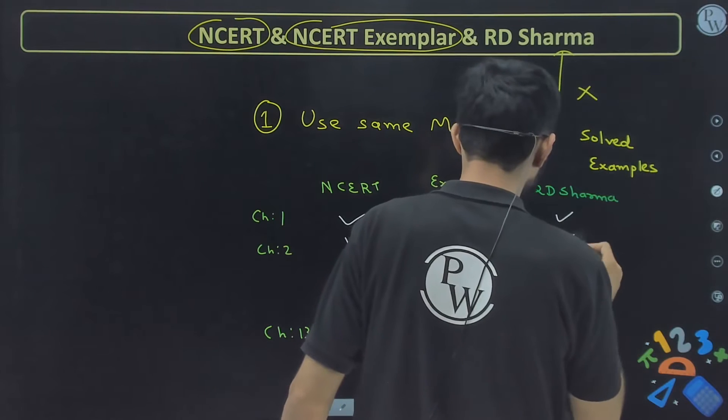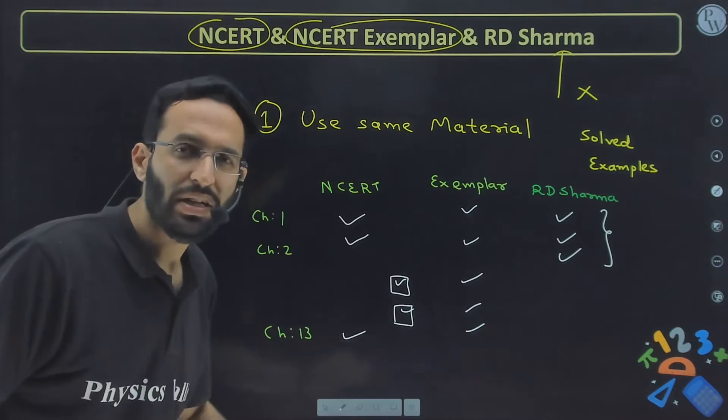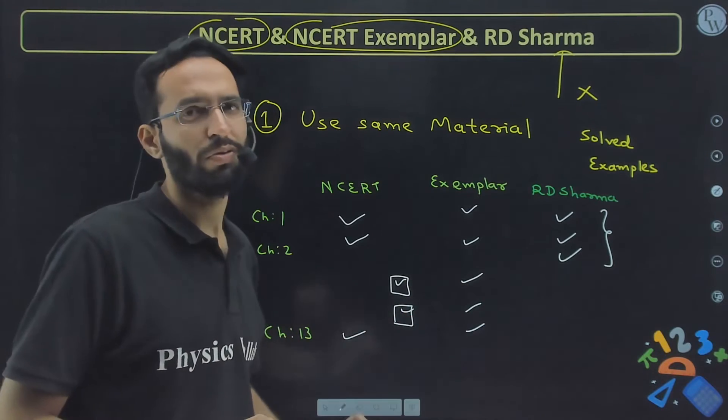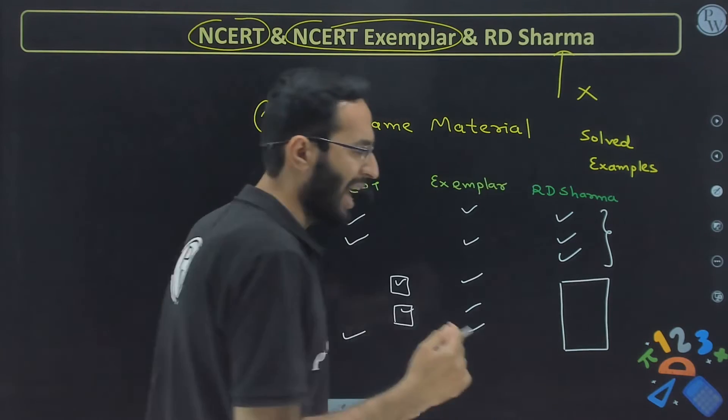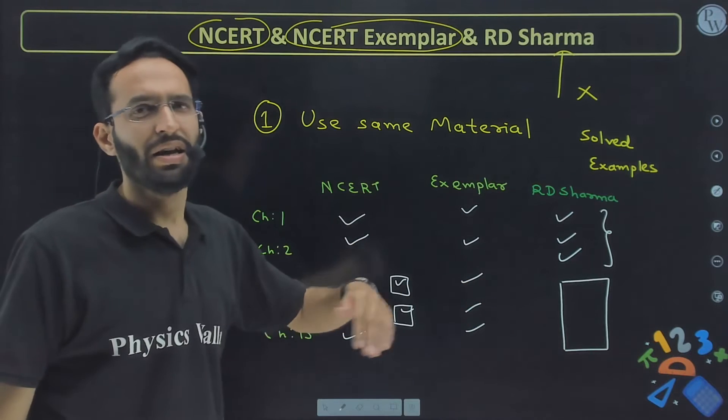In the beginning if you have read RD Sharma only for few chapters and after that you couldn't follow it, not an issue. In the beginning if you have followed RD Sharma, so just revise those chapters only. After that, if you are having enough time that yes sir I am having enough time I can go with this, then and then only you should go for that.